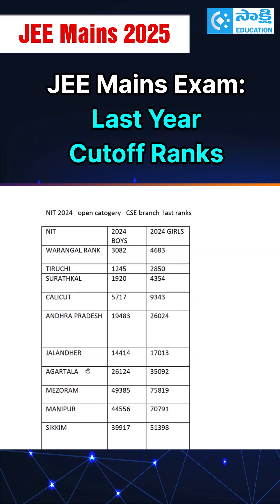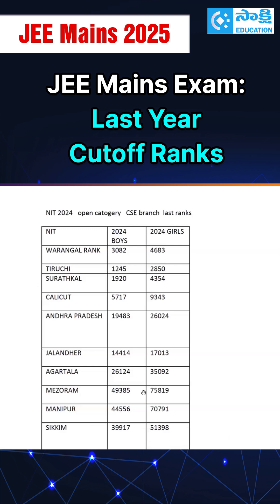For the third tier, if you take colleges like Agartala, Mizoram, Manipur, Sikkim — these are around 70,000 to 75,000 rank range. Open category girl students also got computer science seats in these northeast colleges below 70,000 to 75,000. This you have to remember. And not only tier one — even students with ranks up to around 25,000 on average can get a seat.